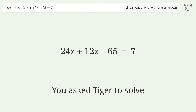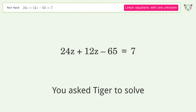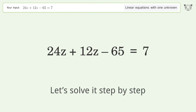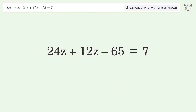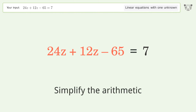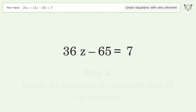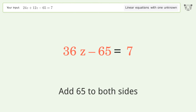You asked Tiger to solve this — it deals with linear equations with one unknown. The final result is z equals 2. Let's solve it step by step. Simplify the expression, simplify the arithmetic, group all constants on the right side of the equation, then add 65 to both sides.